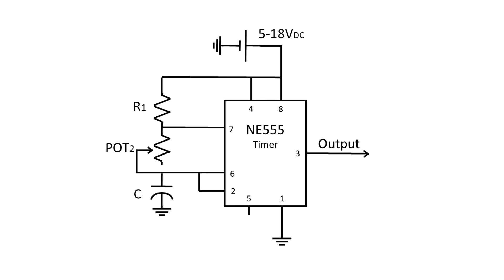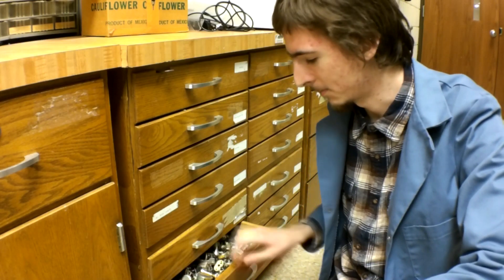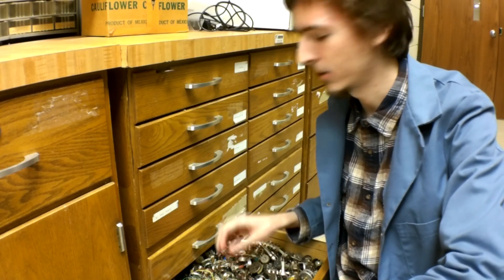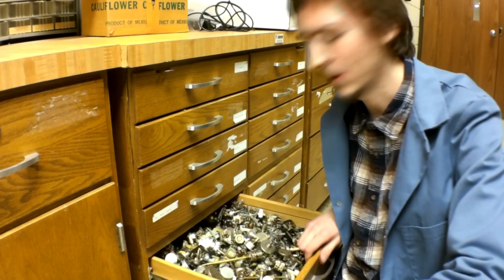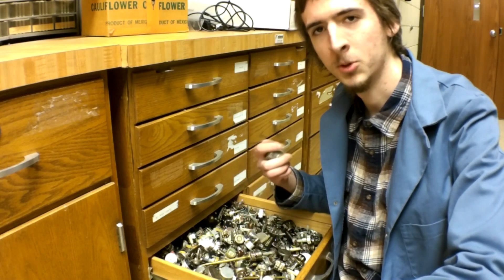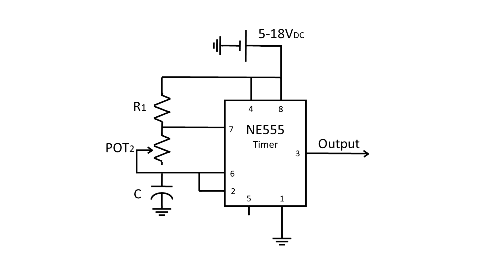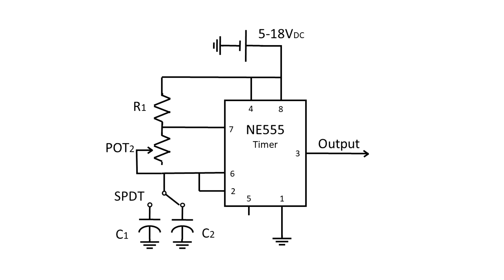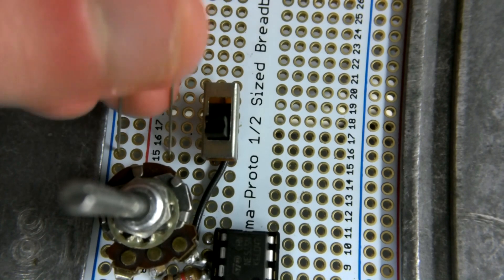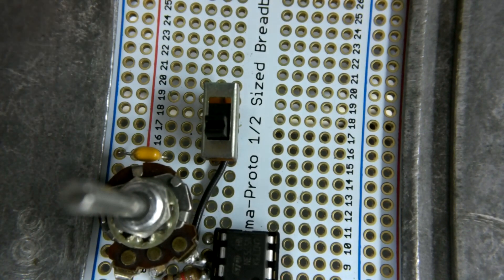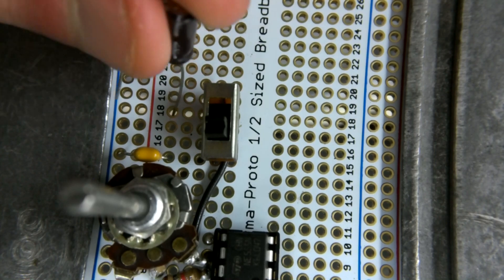A potentiometer is simply a variable resistor. Potentiometers are probably going to be the hardest thing to find, but I was happy to find the ones that I could — so you know, take what you can get. The cap goes between pin 6 and ground. As I showed in the schematic, I want to be able to switch between two capacitors: one small cap for the higher frequencies and a larger one for the slower frequencies. This is because the frequency at which the circuit oscillates is directly contingent on how long it takes to charge the capacitor.